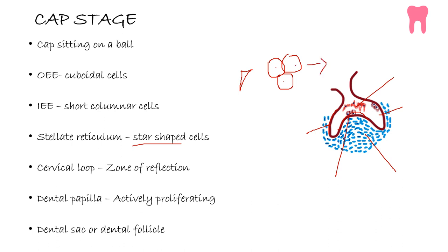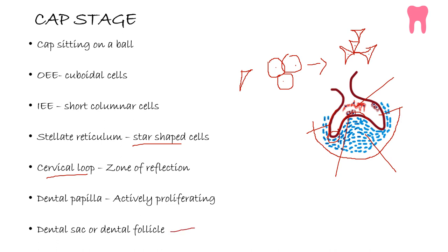Due to this water absorption, the cells will appear star-shaped — they move apart, develop cytoplasmic extensions, and remain connected with one another by desmosomal attachments. This also provides a cushion-like effect to the enamel organ, protecting it from injury. The junction between the outer enamel epithelium and the inner enamel epithelium is the cervical loop, also called the zone of reflection — it is an actively proliferating area. The dental sac is the ecto-mesenchymal condensation surrounding the enamel organ and the dental papilla, and gives rise to the periodontium, cementum, and alveolar bone proper.